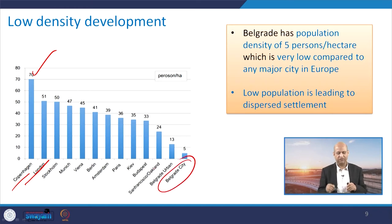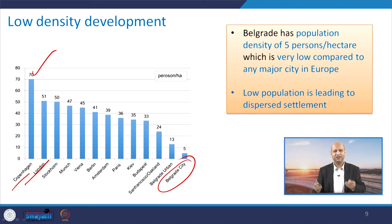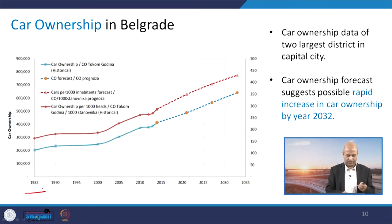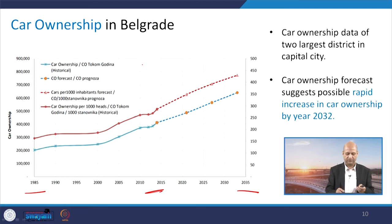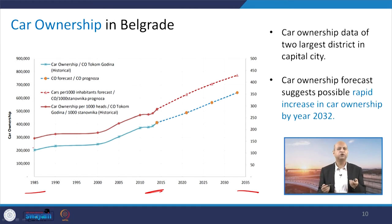Belgrade city has the minimum density if you compare with Berlin, Munich, Amsterdam, or Paris — so there is huge scope to bring population a little closer so that they can have better interaction and faster economic activities. Car ownership is increasing historically from 1985, with projections up to 2035. The data up to 2015 shows the growth trend, and the forecast for car ownership — cars per 1000 inhabitants — shows it is increasing as population also increases. Naturally, the need for transportation is also increasing.